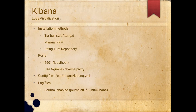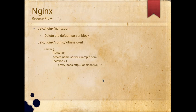Kibana is the visualization tool where you can see the logs. The installation method is the same as Elasticsearch — we're going to use the YUM repository. It will be listening on port 5601. We're going to use Nginx as the reverse proxy. Kibana doesn't have a logs directory like /var/log/something, so you can use the journal to look at Kibana logs. Nginx is just a reverse proxy, nothing serious.